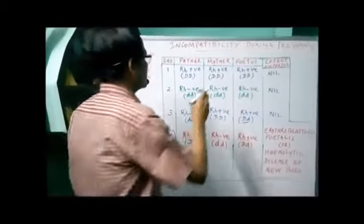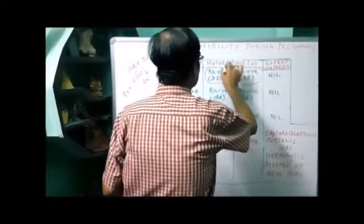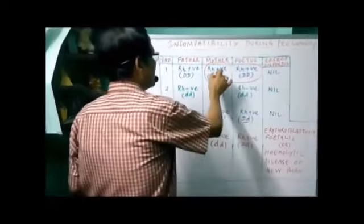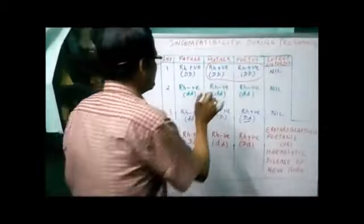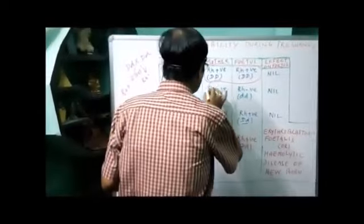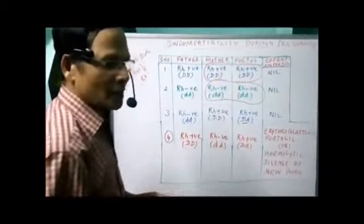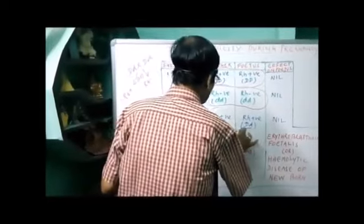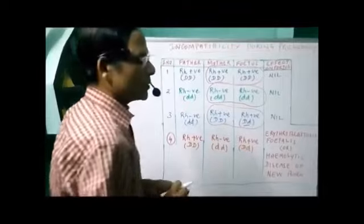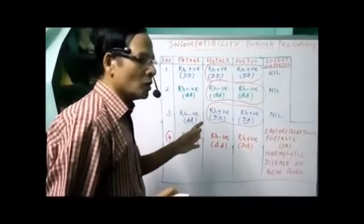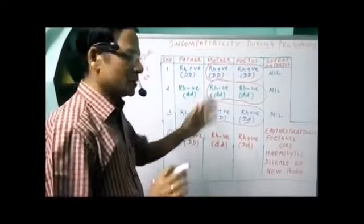Now comparing all these cases — if you take the mother's blood and the fetal blood in the first case, both are positive. In the second case, both mother's and fetal blood are Rh negative — same, nothing would happen. In the third case also, both mother's and fetal blood are the same. That is why there is no harm to the fetus.